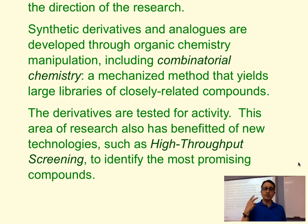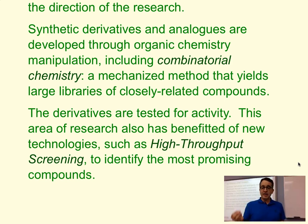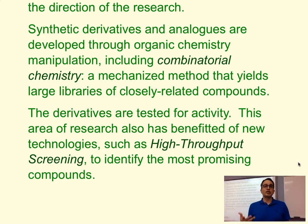Those derivatives — that whole library of compounds — are tested through new methods as well, such as high throughput screening, which uses ELISA testing, where we have an antibody that will bond to a particular structure. We want that antibody to have, perhaps, the shape of the receptor in the cell that will trigger the action we want. Other methodologies are also available and will be seen in stage two.